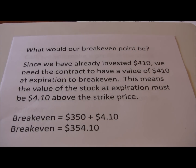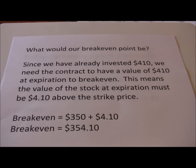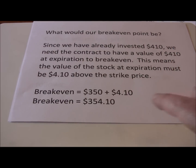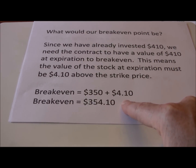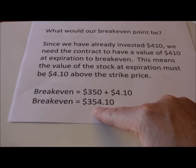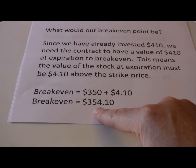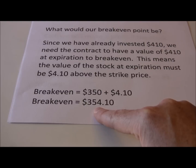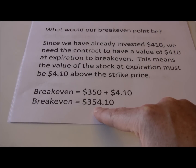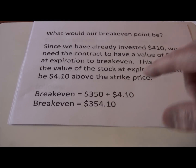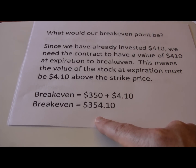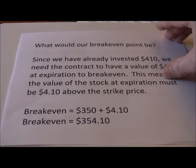So what would our break-even point be? Since we've already invested $410, we need the contract to have a value of $410 at expiration in order to break even. This means the stock at expiration must be $4.10 above the strike price. Our break-even is the $350 strike price plus the $4.10 premium we originally paid, giving us $354.10. The stock price has to reach $354.10 by the third Friday in June for us to make a profit. Anything above $354.10 generates a profit; anything below $350 means we lose our entire initial investment; between $350 and $354.10 we lose part of our initial investment.